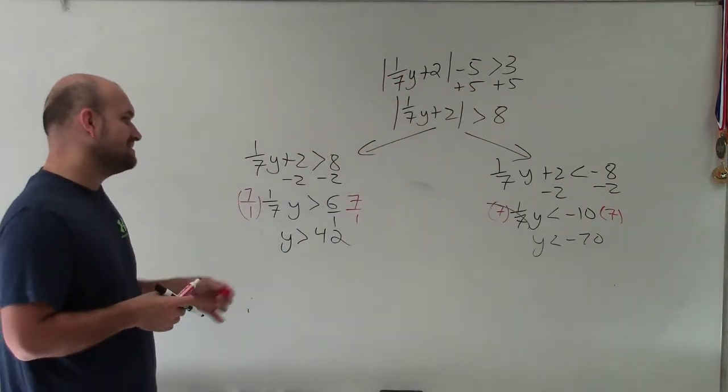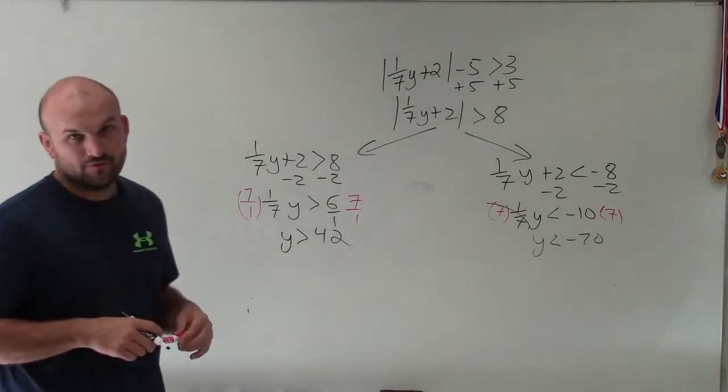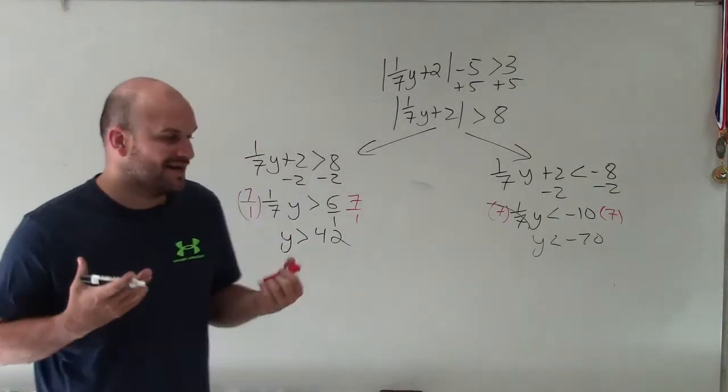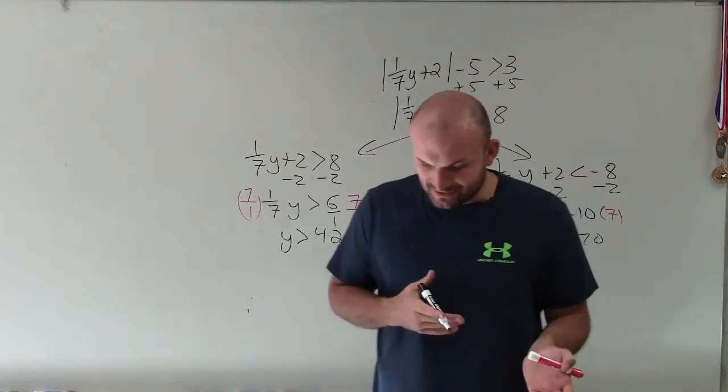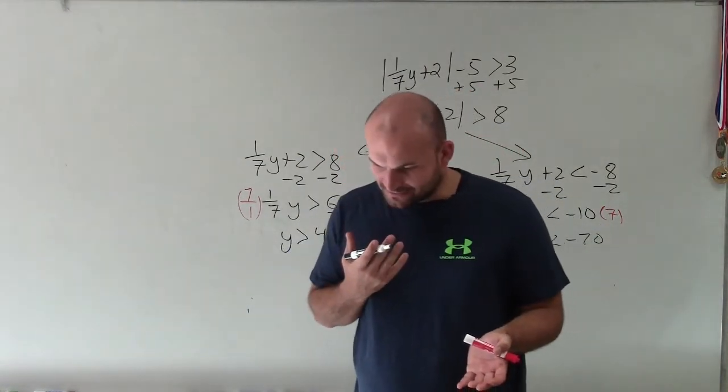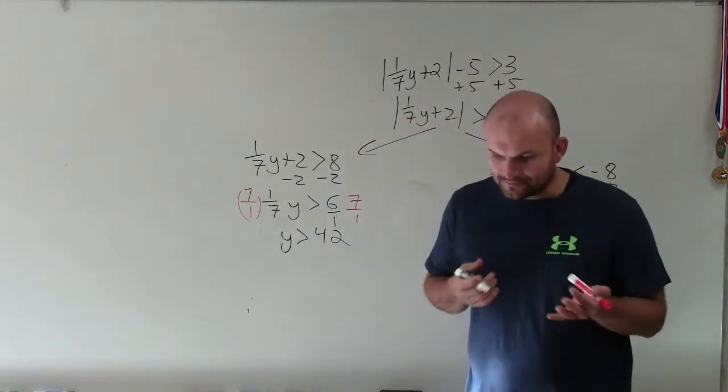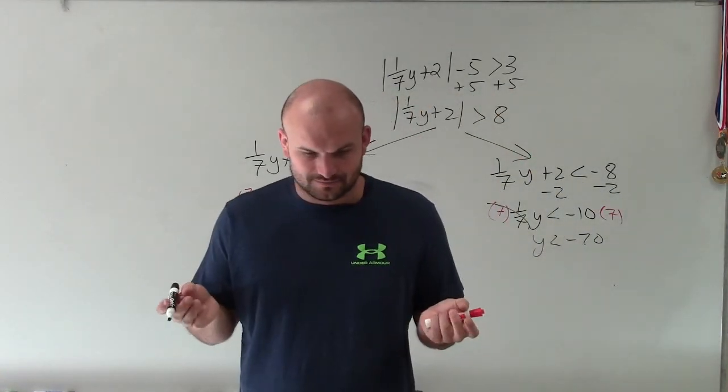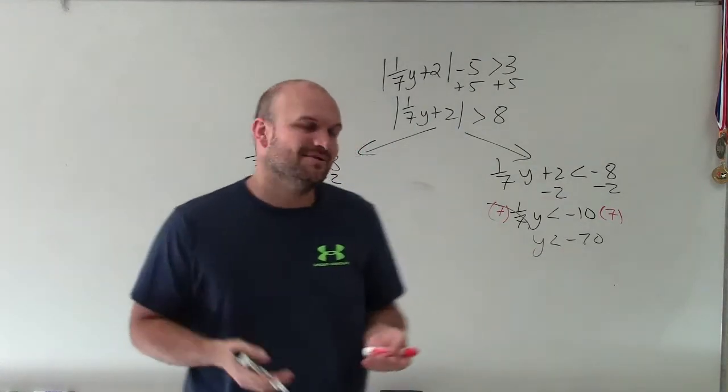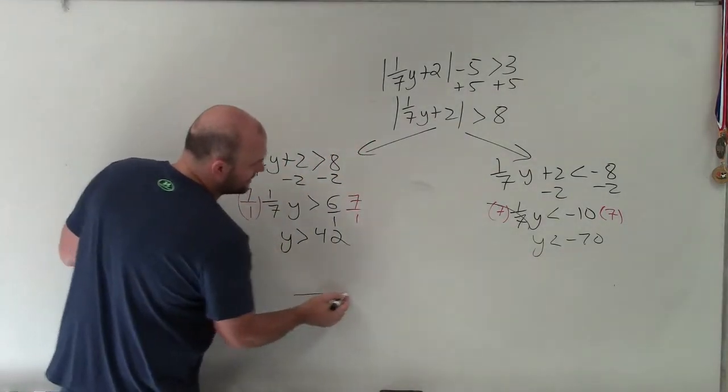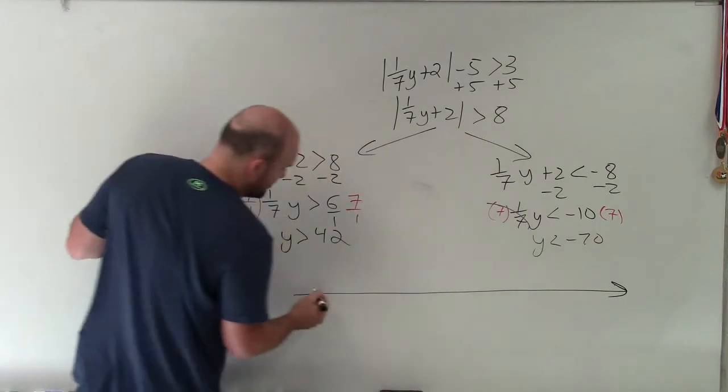So we have y is less than negative 70, and y is greater than 42. So when I'm creating my table here, what I'm basically going to be doing is creating a number line by going by 10s.